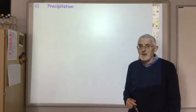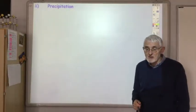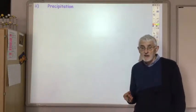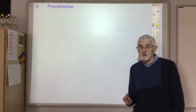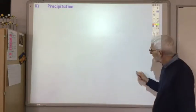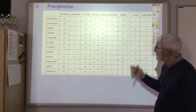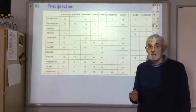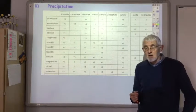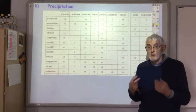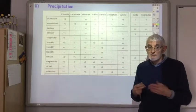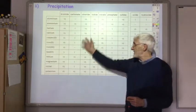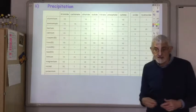The second qualitative test you should know about is a precipitation reaction. Again, you're going to use data in your data booklet to interpret the results. On page 8 of your data booklet you'll find the table of solubilities. Precipitation reactions occur when you mix two solutions and a solid is produced — the solid has to be insoluble in water.